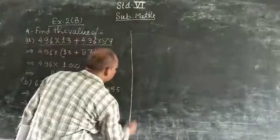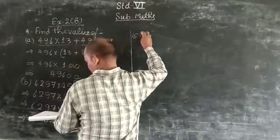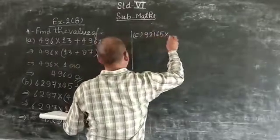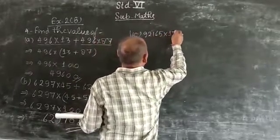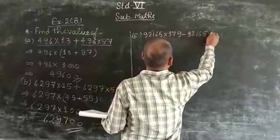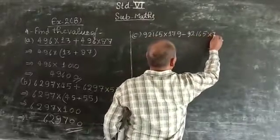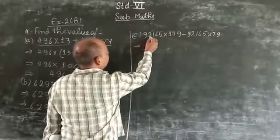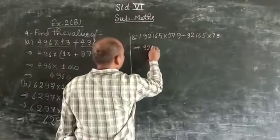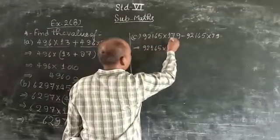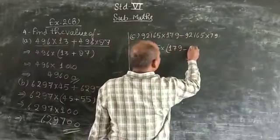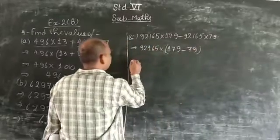Next, part number C: 92,165 × 179 minus 92,165 × 79. Here, 92,165 is common. This 92,165 multiplied. The remaining numbers: 179 minus 79.